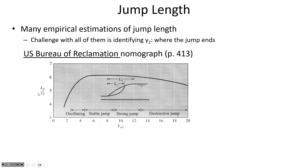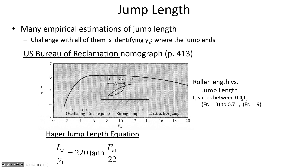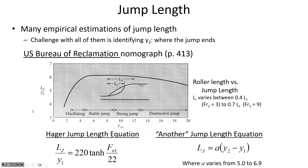Roller length varies from about 0.4 to 0.7 times the jump length. The Hager jump length equation uses the upstream Froude number to give the ratio of jump length to upstream depth y1. There's also another jump length equation that empirically estimates jump length with a calibrated factor a varying from 5 to 6.9.